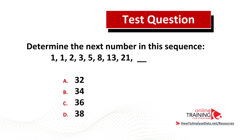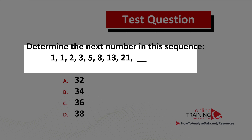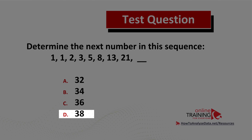Here is a question from the real test you can try on your own. Determine the next number in this sequence: 1, 1, 2, 3, 5, 8, 13, 21, and then the missing number. You have four choices: a) 32, b) 34, c) 36, d) 38. Pause and try to solve this now.